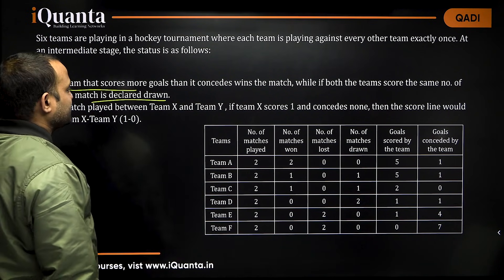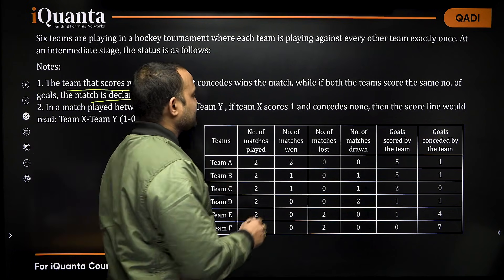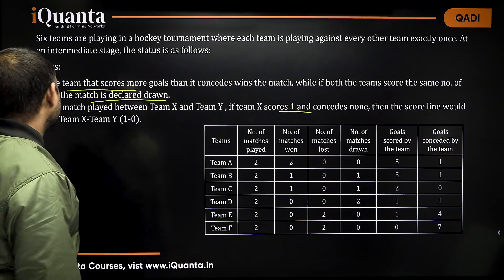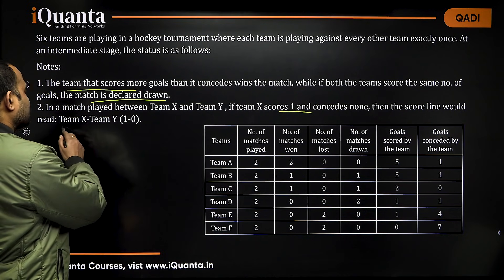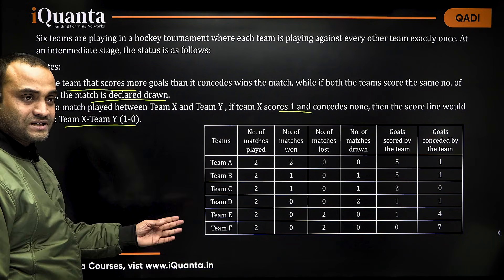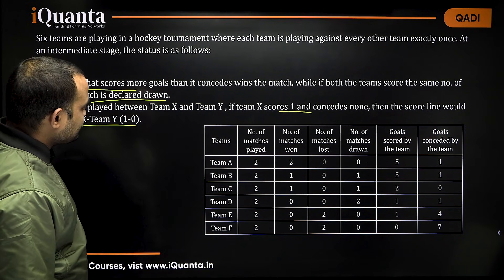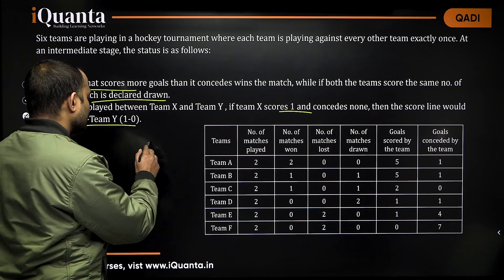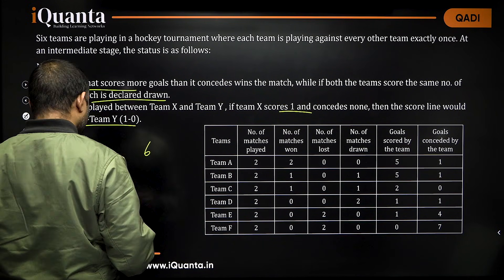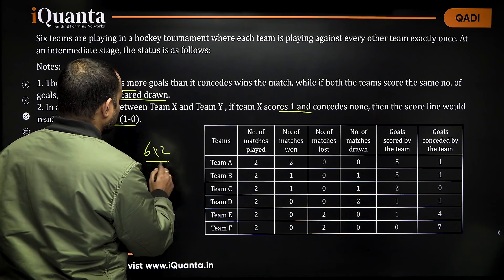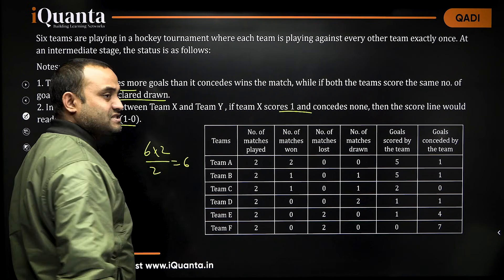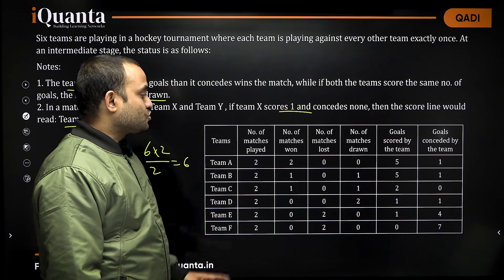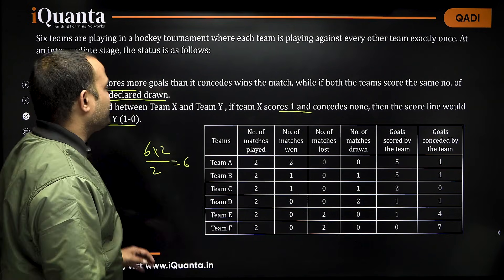The match played between team X and team Y — if team X scores one and concedes none, then the score line would be team X, team Y, 1-0. Each team has played exactly two matches. With six teams and two matches each, it will be a total of 6×2÷2 = 6 matches in total, because each match has two teams involved. So, total six matches details have been given.